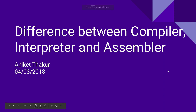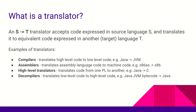Hello everyone, this is Aniket Thakur and in this video I'm going to tell you the difference between compiler, interpreter, and assembler. Before we go to that, let's understand what a translator is. A translator is a generic term that basically converts a source language into a target language, and some examples of translators are compilers, assemblers, high-level translators, and decompilers.